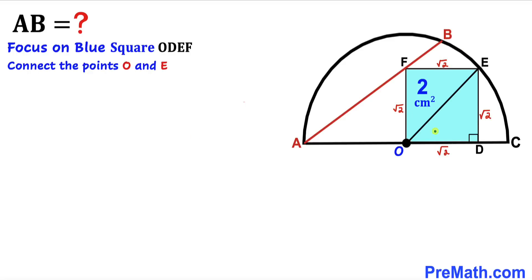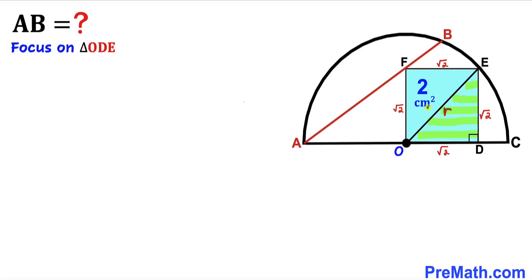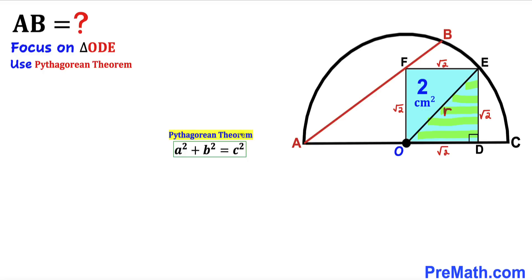I've connected center O with point E, and we can see that OE is the radius of this quarter circle. Let's label this radius as r. As a result, we get right triangle ODE, and we'll use the Pythagorean theorem on triangle ODE to find the value of r.